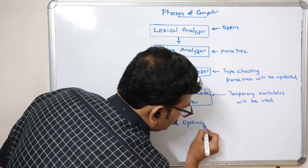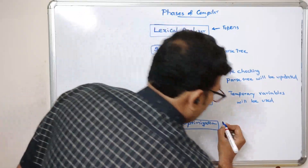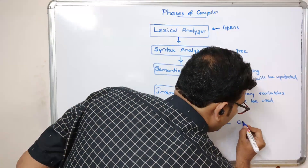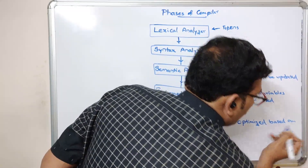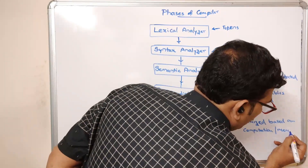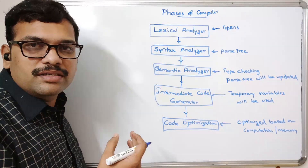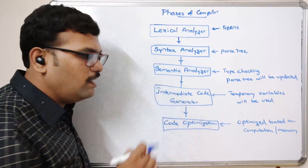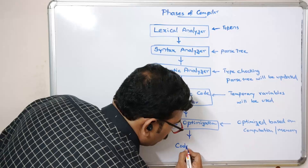In code optimization, the code returned using temporary variables will be optimized based on computation or memory. We can reduce the memory requirement or reduce the number of computations. By reducing those things, we optimize the code which is generated in the intermediate code generator.